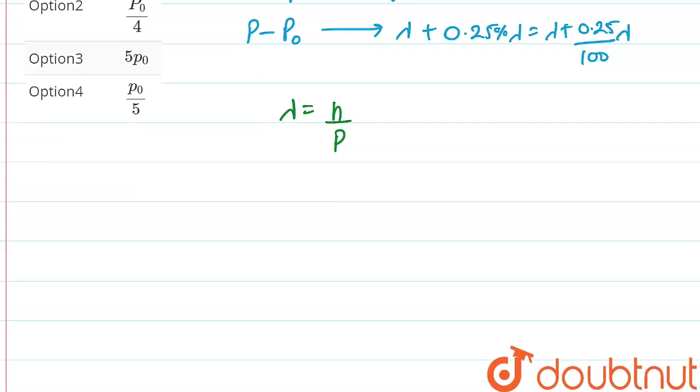So the situation is like this: lambda plus 0.25 upon 100 lambda. The wavelength increased by 0.25%, then h upon p minus p0. The momentum decreased by p0.